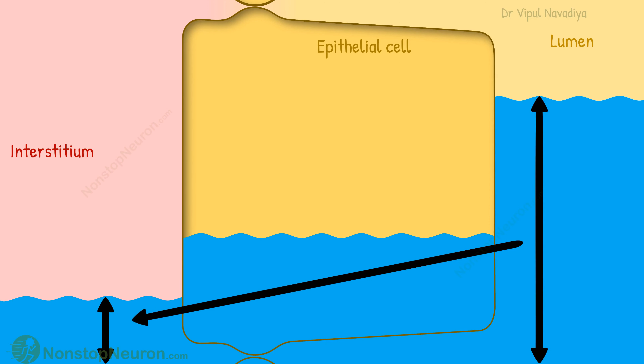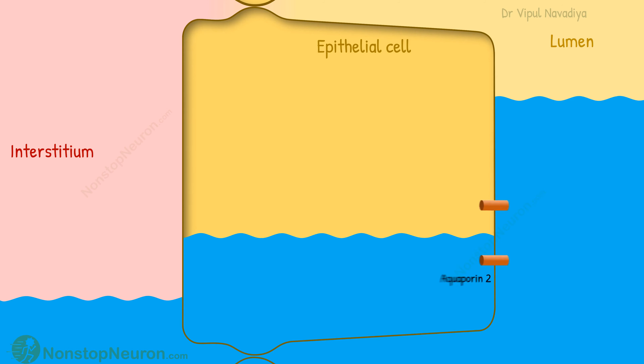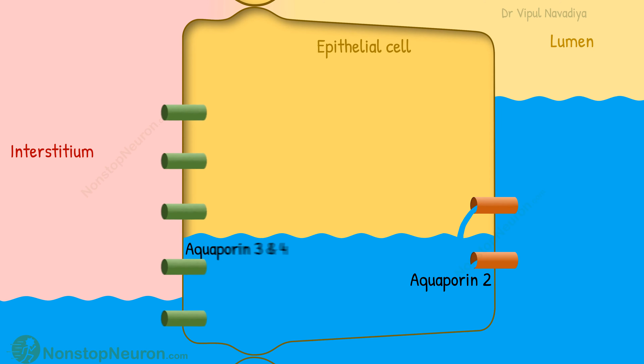This osmotic gradient favors water reabsorption from the lumen into the interstitium. This movement occurs by aquaporin-2 on the apical membrane, and aquaporin-3 and aquaporin-4 on the basolateral membrane.